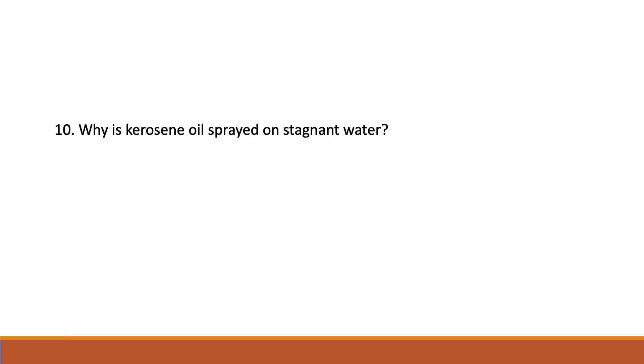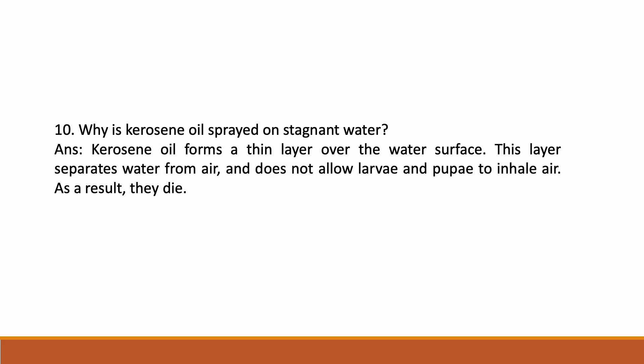Why is kerosene oil sprayed on stagnant water? Kerosene oil forms a thin layer over the water surface. This layer separates water from air and does not allow the larvae and pupae to inhale air. As a result, they die.